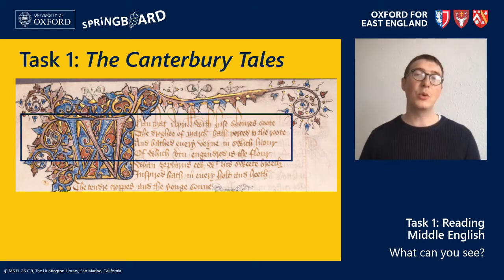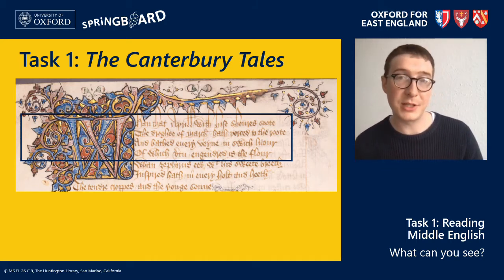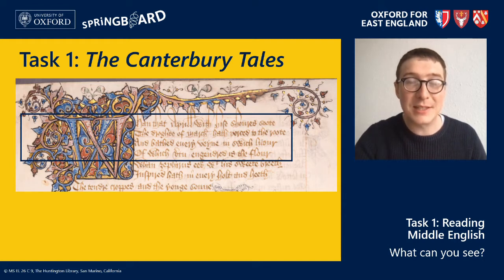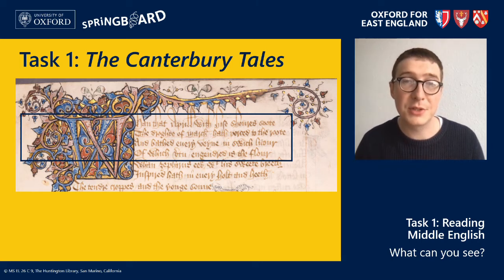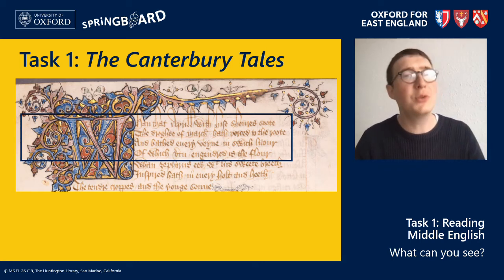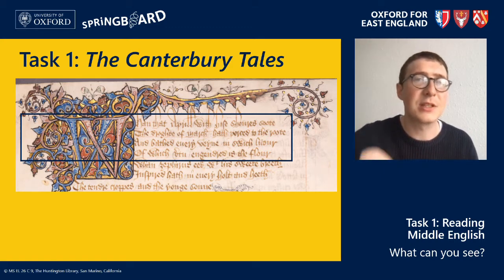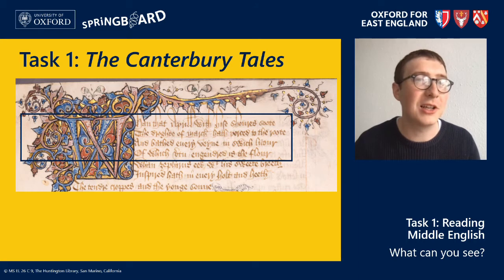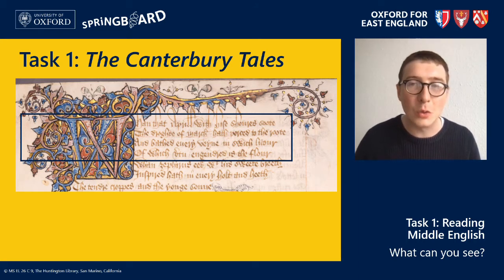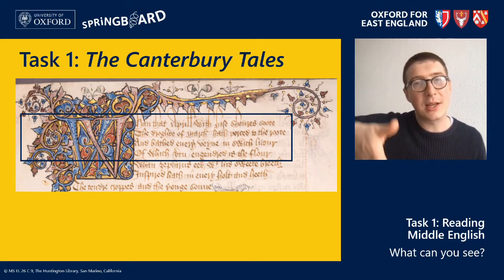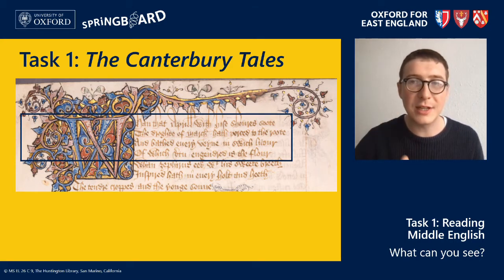Nonetheless, we can tell that whoever wrote this copy of the Canterbury Tales was wealthy, just by looking at it. It's made of vellum to begin with, and vellum wasn't cheap to produce. We can also tell from the beautifully ornate drawings around the first few lines — the lovely little swirls and the colours of blue and red and gold. Even the text is very neatly written, with nice little strokes. It's all very tidy. These are not some cheap scribblings.